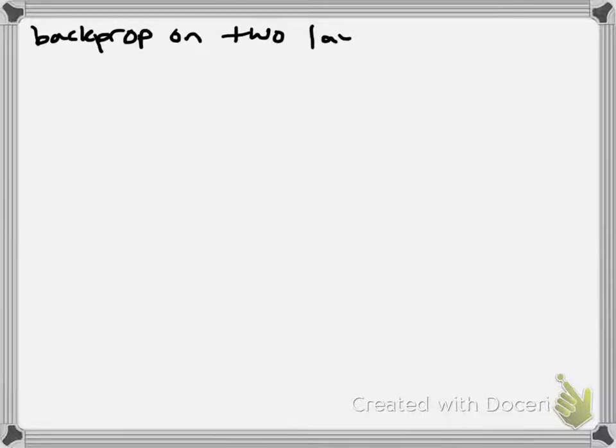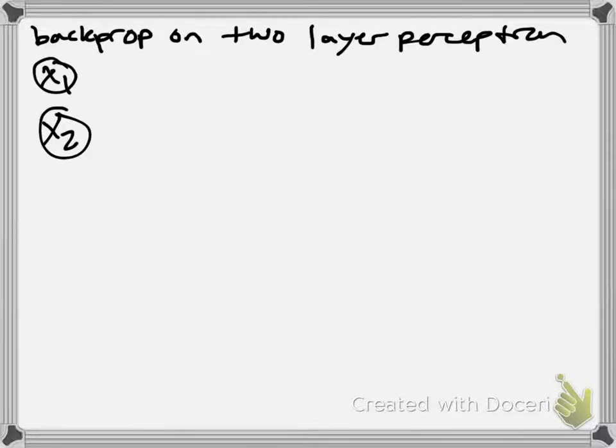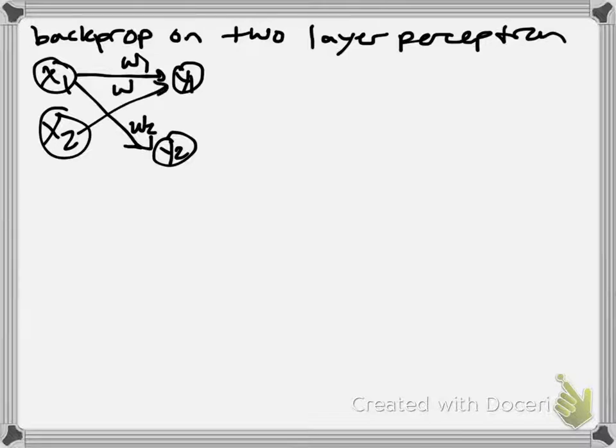So this will be a two-layer perceptron. And we have two inputs. And each of these inputs gets sent to two neurons of the hidden layer. And so we have four weights in the first step.